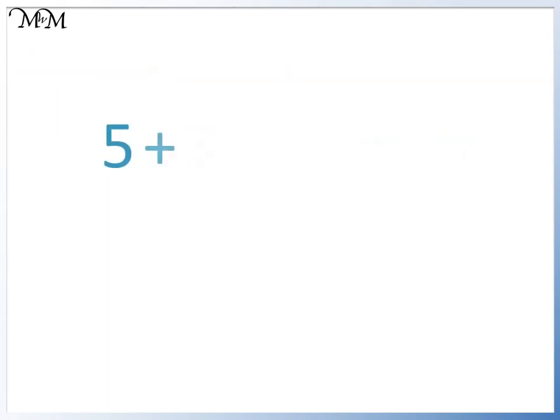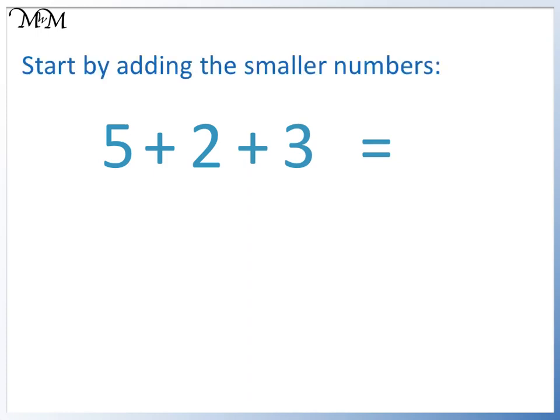Here we have 5 plus 2 plus 3. We will start by adding the smaller numbers. 2 plus 3 equals 5. We now have 5 plus 5.